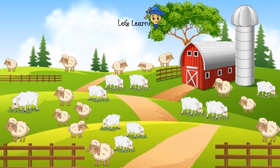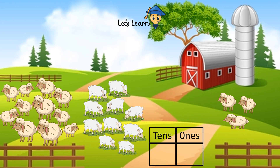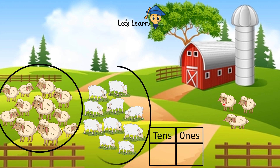Oh, this is a farm and there are so many sheep over there. Let's count these sheep in an easy way. I have divided the sheep into groups of 10, and there are some sheep which are left alone. First divide the sheep into groups of 10. There is one group of 10 and two groups of 10.